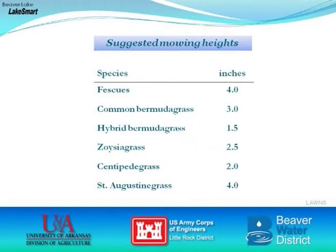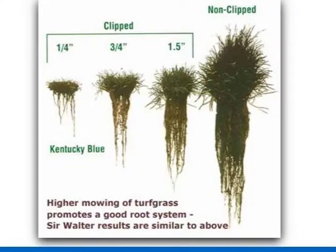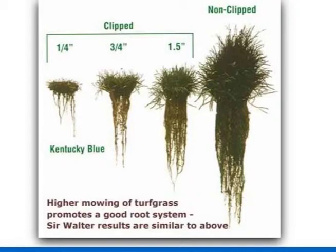This slide shows Kentucky bluegrass mown at different heights — a quarter inch, three quarters of an inch, or an inch and a half — compared to unmown grass. The higher the mowing height, the deeper the root system. By mowing your lawn higher, you'll have a deeper root system, which means the plant will be healthier, access more nutrients, be more drought tolerant, and you won't have to spend as much time watering in the summer months.